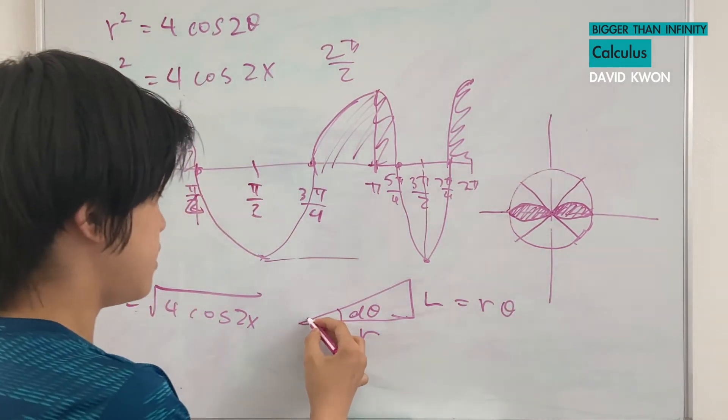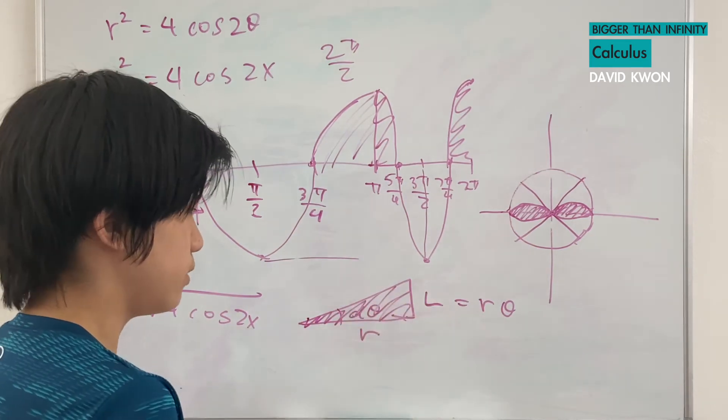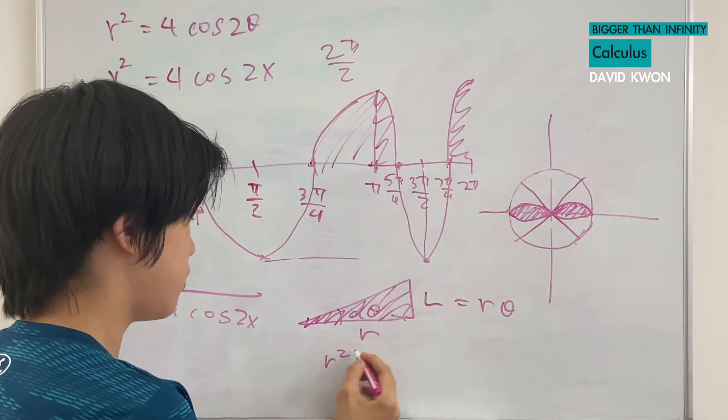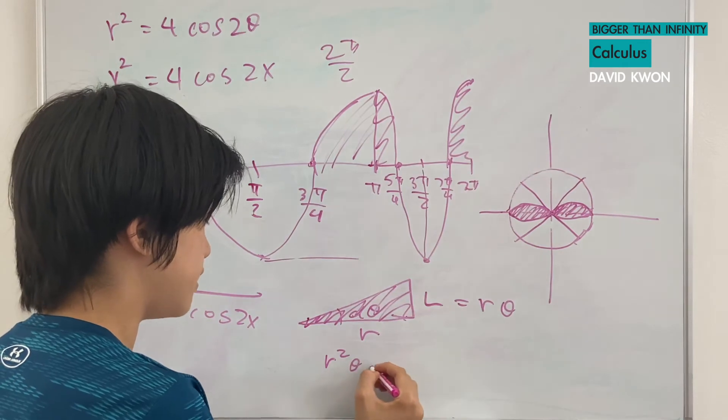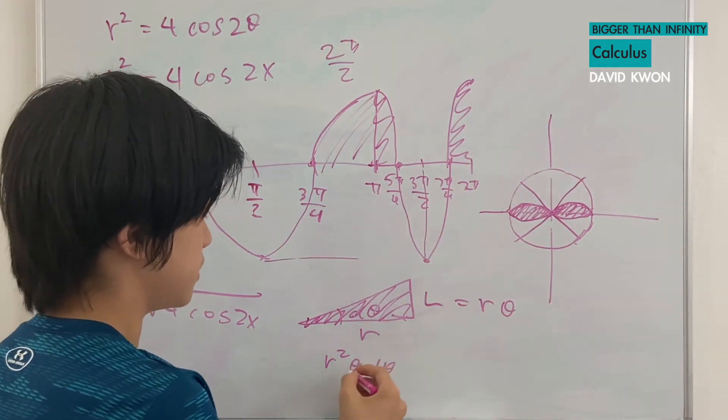And this is a length that is r times θ. But, to find the area of this triangle, that is r squared times dθ. So, let's do this.